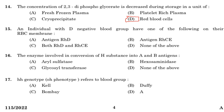Fifteenth question: an individual with a D-negative blood group will have one of the following on their RBC membrane. Option A: antigen RH-D. Option B: antigen RH-CE. Option C: both RH-D and RH-CE. Option D: none of the above. Answer is Option B, antigen RH-CE. The RH blood group system consists of numerous antigens located on variant forms of RH-D and RH-CE proteins.